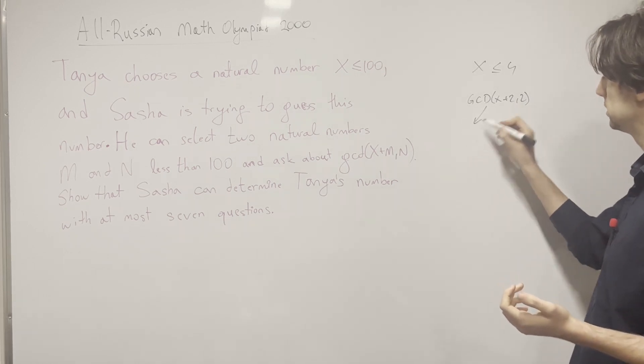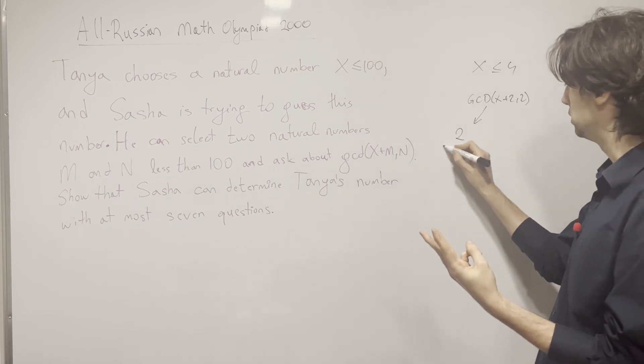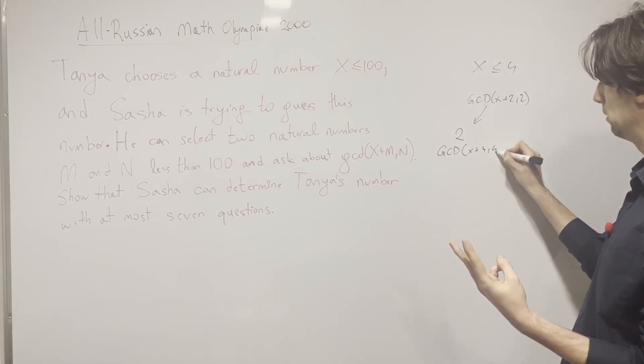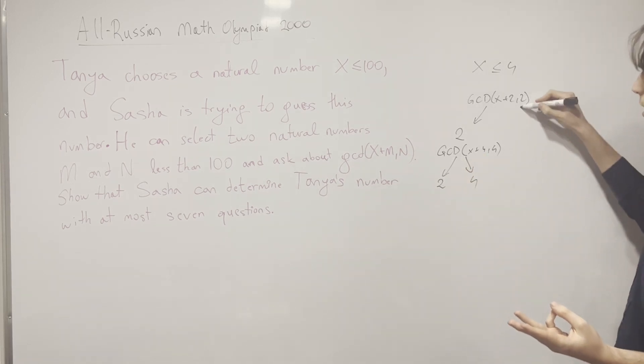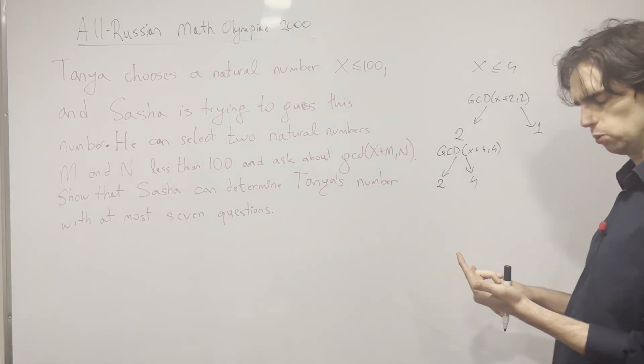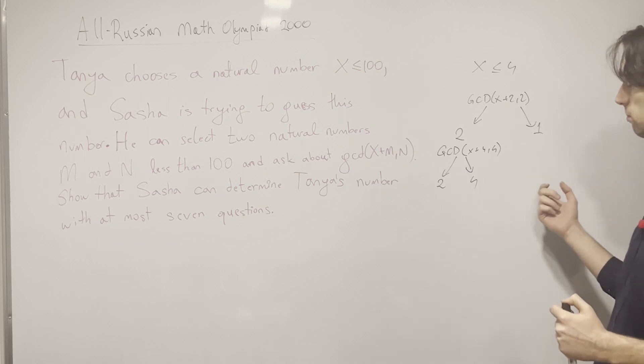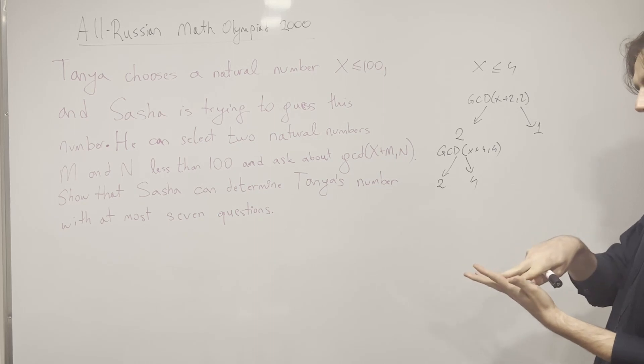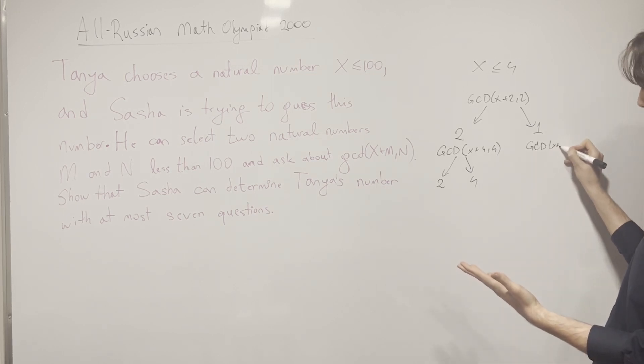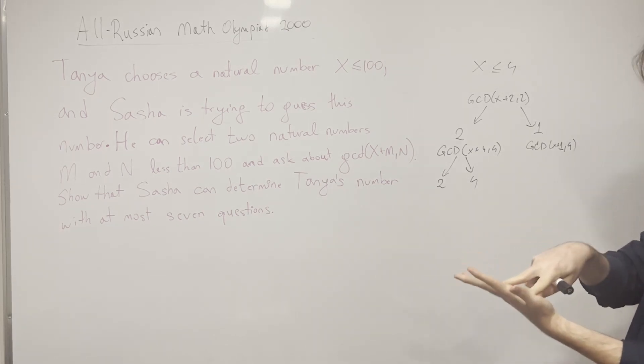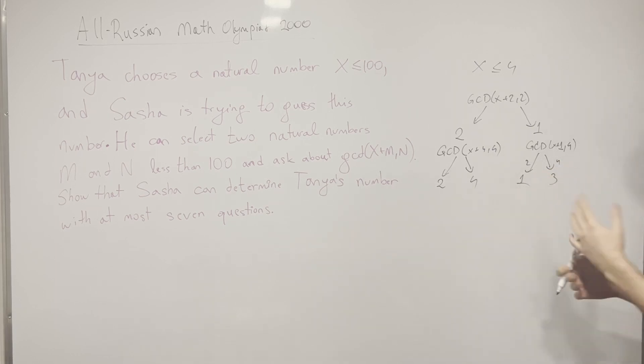Now if it's even, say this equals two, then I want to determine if it's a two or a four. I think the simplest way is the GCD of X plus 4 and 4. If that is four, the number is four; if that is two, the number is two. And here if I get one, I'm looking between one and three. I can do the GCD of X plus 1 and 4, because if X plus 1 gives me four then I know the answer is three, and if it gives me two I know the answer is one. So I can figure this out in two questions.